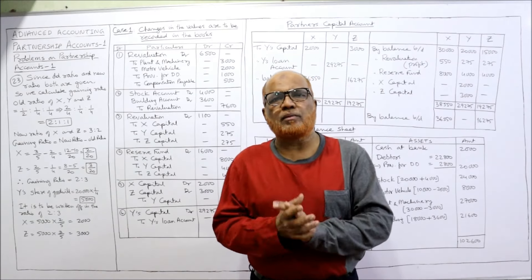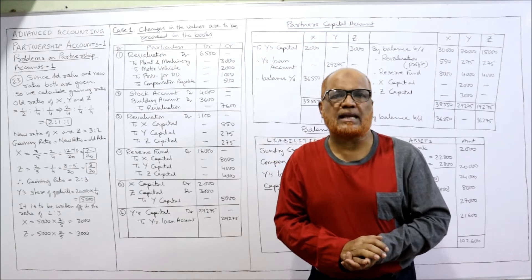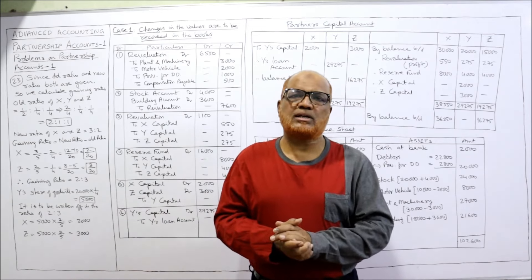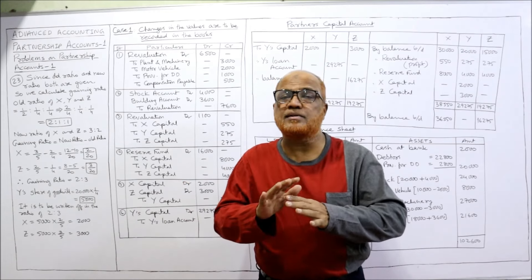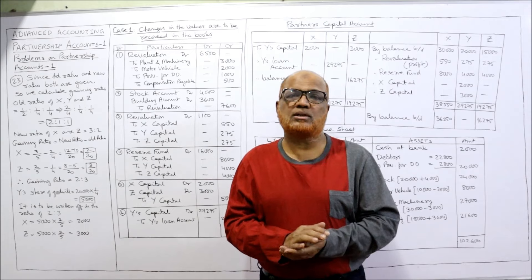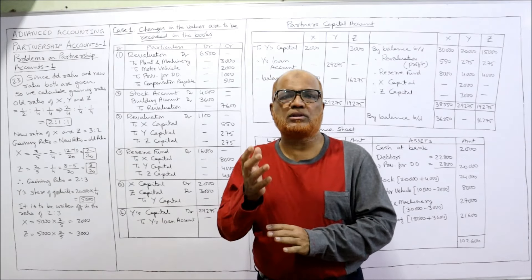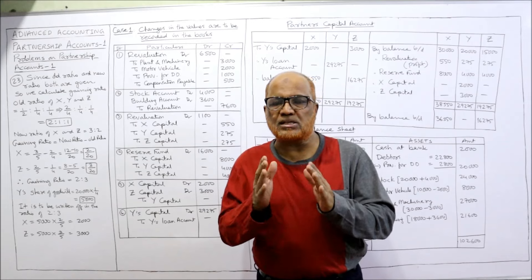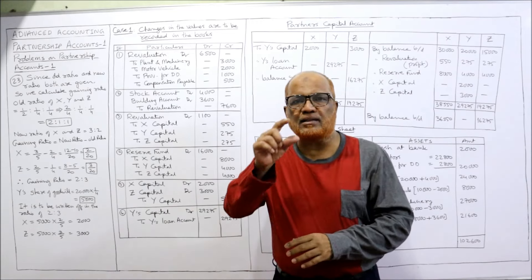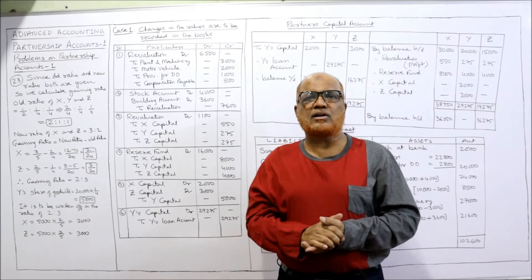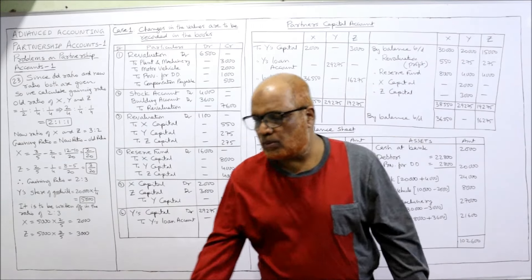This problem is a lengthy problem because we are seeing two situations: first, a situation where we are changing the values of assets and liabilities, and second, a case where we are not changing the assets and liabilities. These two situations we are going to cover in this problem. For perfect knowledge, watch till the end. You must also have basic knowledge about partnership accounts, so I suggest you don't miss the theory videos. Go to the playlist of my channel, select Advanced Accounting, and watch the partnership theory videos to be perfect on the concept.